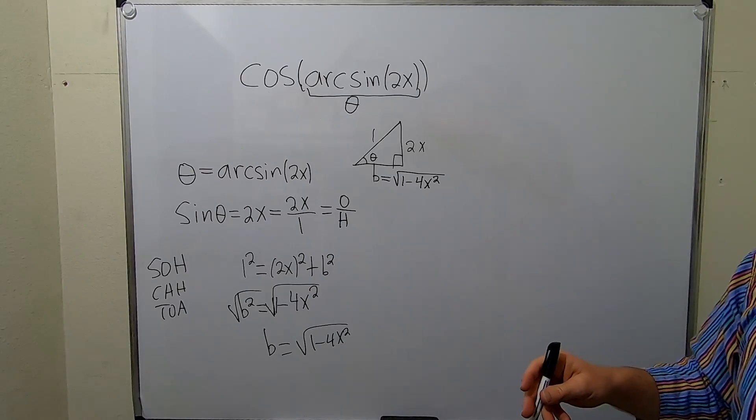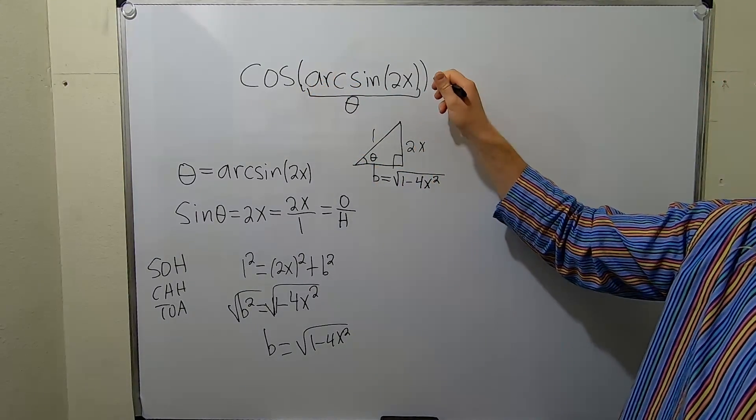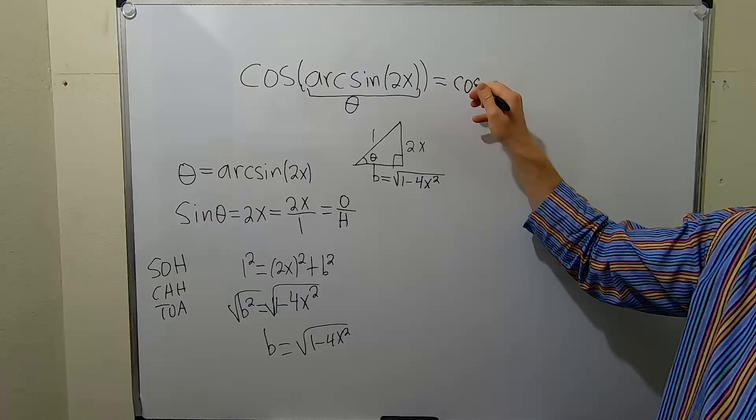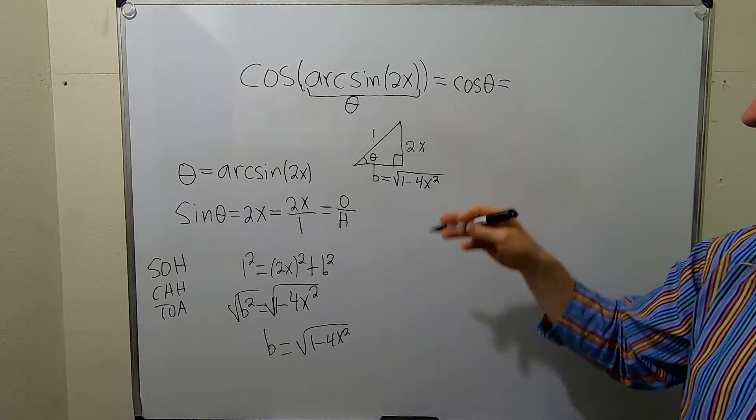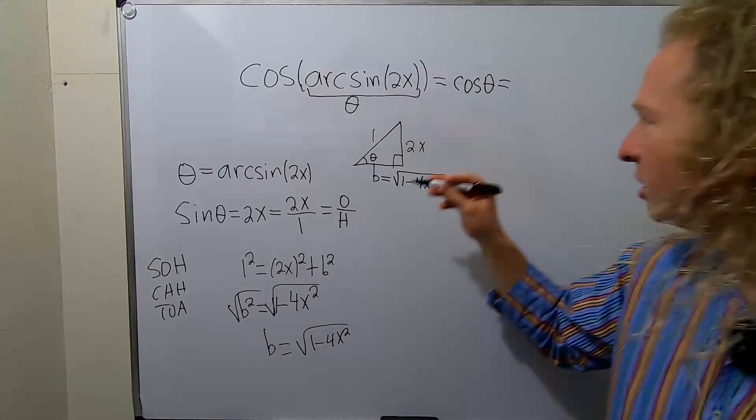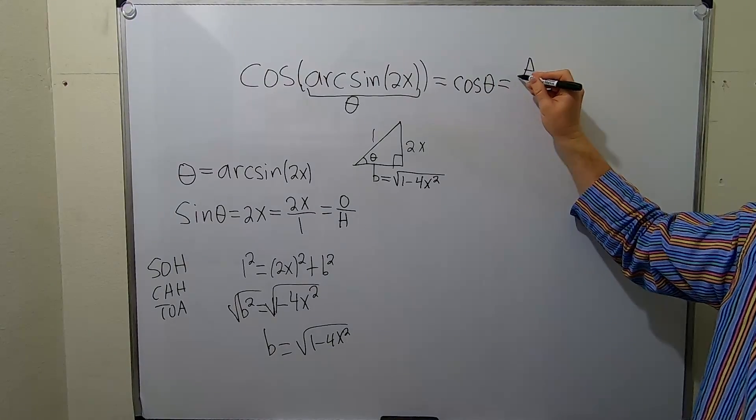So going back to the beginning. So from the beginning, we have this. We know this is equal to cosine of theta. And we know, using our ancient proverb, this is A over H. So I'll even write it. A over H.